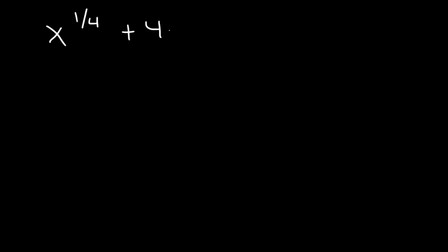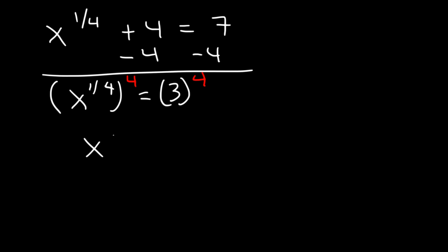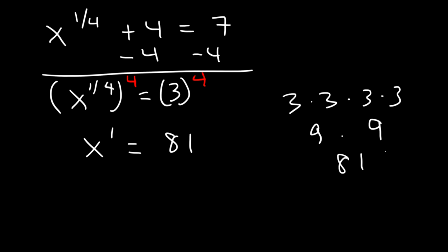Here's another one: x raised to the 1/4 plus 4 is equal to 7. Let's begin by subtracting both sides by 4, so x to the 1/4 equals 7 minus 4, which is 3. To get rid of the 1/4 exponent, we raise both sides to the 4th power. 1/4 times 4 is just 1, and 3 to the 4th is 81 — that's 3 times 3 times 3 times 3: 3 times 3 is 9, and the other two 3s are also 9, and 9 times 9 is 81.